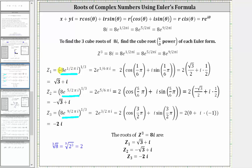Simplifying for z₁: 8 to the power of 1/3 is the cube root of 8, which equals 2. For e raised to the power of i·(π/2), we multiply the exponent by 1/3, giving an exponent of i·(π/6). Converting back to polar form, r equals 2 and theta equals π/6, giving us the complex root in polar form.